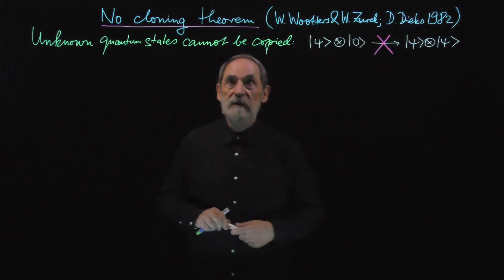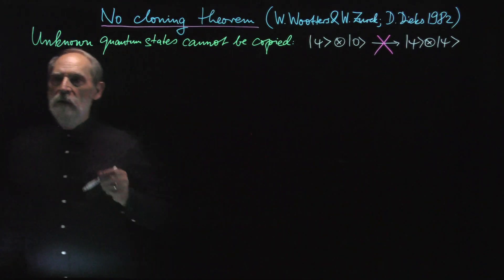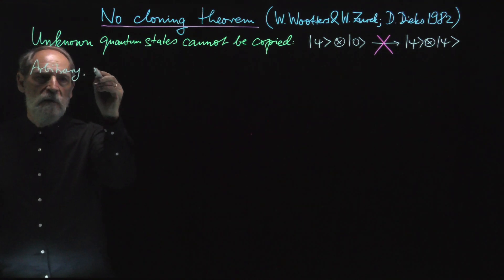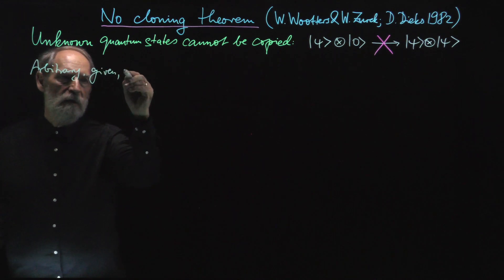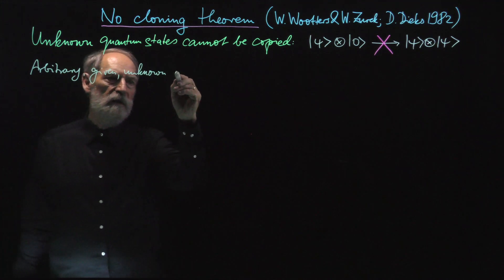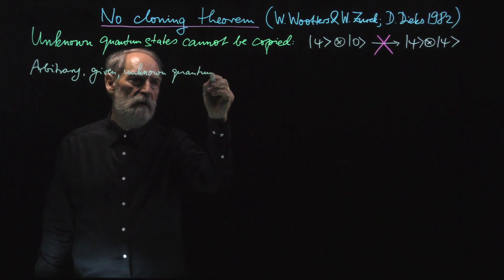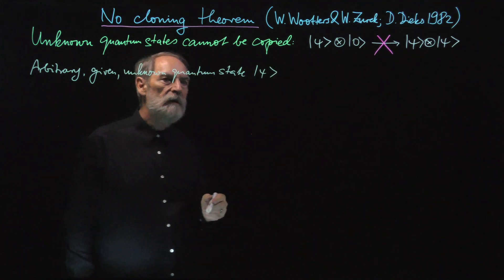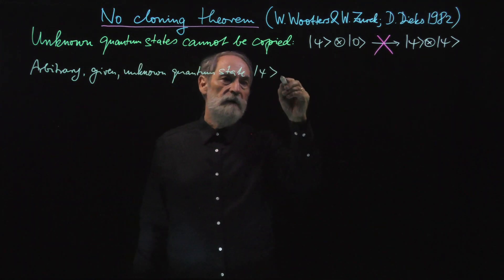All right, so this is about the no-cloning theorem. We have an arbitrary given and unknown quantum state that we describe by the ket psi, and we want to copy it.